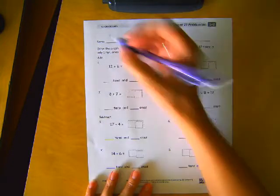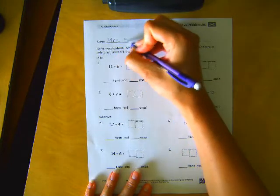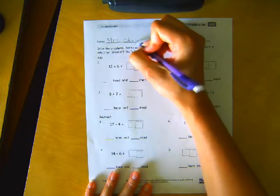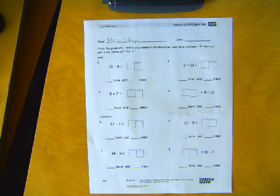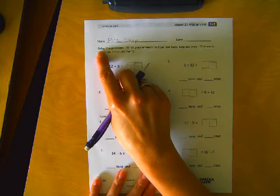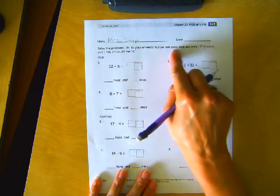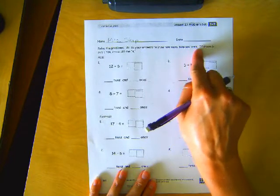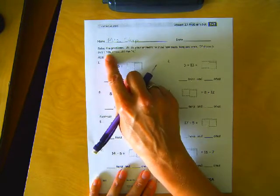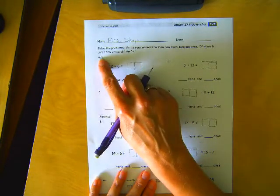Aim on your paper. First thing. Reading fingers ready. Solve the problems. Write your answers to show how many tens and ones. If there is only one ten, cross off the S. Add. Here we go.